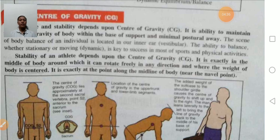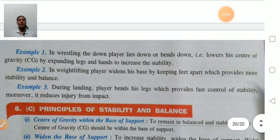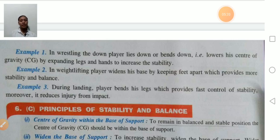The center of gravity is at a point along the midline of the body. In sports, the person who has the ability to balance themselves, whether stationary or moving, has a key to success. For example, in wrestling, the player bends down to lower his center of gravity. If the center of gravity is low, stability is more. He lowers his center of gravity by expanding the legs and hands, thereby increasing stability.